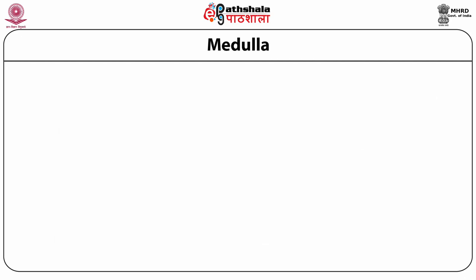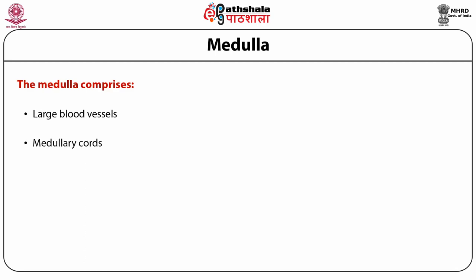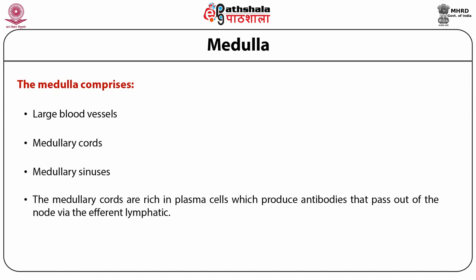The medullary region comprises large blood vessels, medullary cords, and medullary sinuses. The medullary cords are rich in plasma cells, which produce antibodies that pass out of the node via the efferent lymphatics. Macrophages are also numerous within the medulla.